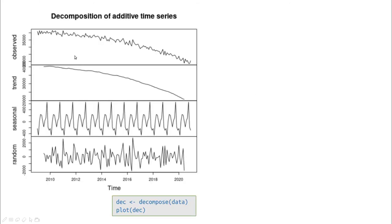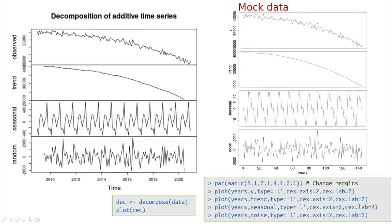Let's use `decompose` and see how well it works. The output shows the original signal, the estimated trend — not a perfect parabola because of the added noise — and the seasonal part, whose estimation is not as good as I would like due to the noise. The residual is pretty much noise, which is good enough. Comparing with the original data, there are some differences.